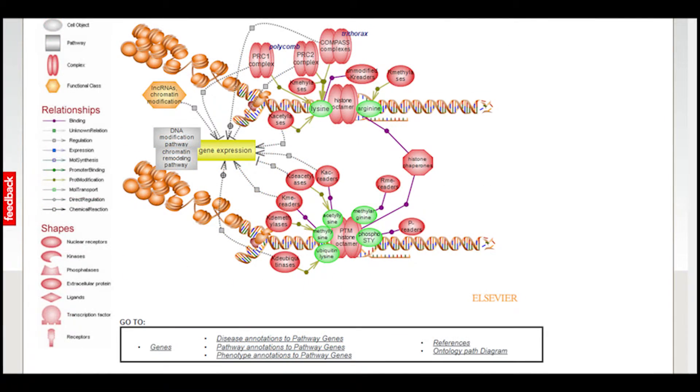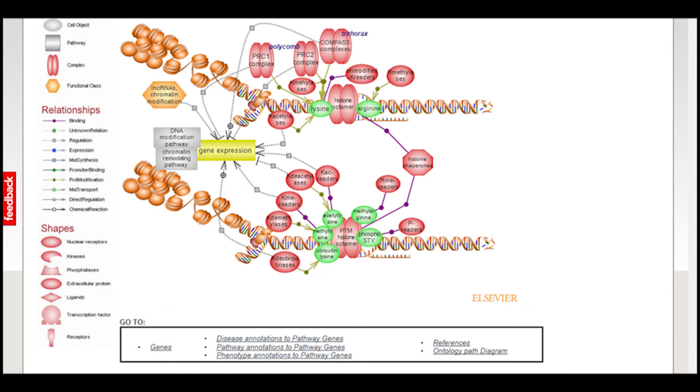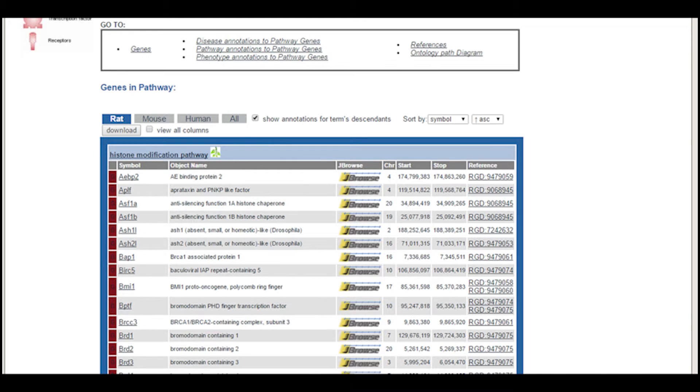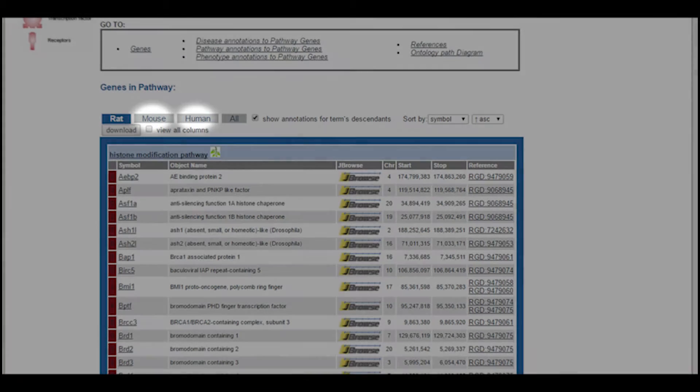Directly under the diagram is a list of links to additional information about the components of the pathway. Click a link to go directly to that section of the page or scroll down through the sections. The first section indicates the genes in that pathway. The default is for rat, but you can view the genes from mouse and human as well using the tabs at the top of the table.